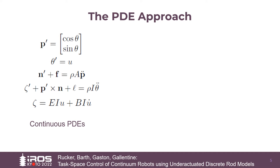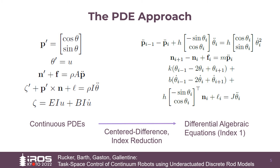We explore two different ways of arriving at the same dynamic equations for an underactuated continuum robot. First, we can start with the continuous partial differential equations of an elastic rod and discretize them along the arc length using a centered difference scheme. This results in a set of differential algebraic equations with index 3. Performing index reduction produces an index 1 system that can be integrated in time using standard approaches.